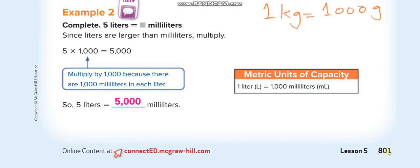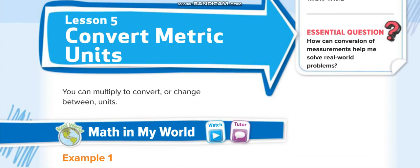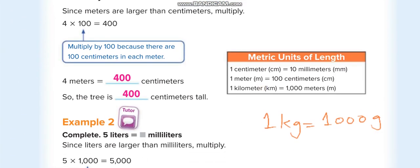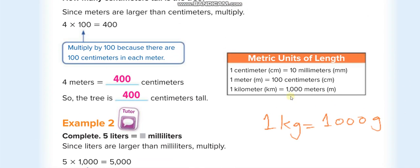In this lesson we are going to convert metric units — the metric units of length, the metric units of capacity for liquid, and the metric units of mass. We studied four units in length: millimeters, centimeters, meters, and kilometers. You have to memorize this table: one centimeter equals ten millimeters, one meter equals one hundred centimeters, and one kilometer equals one thousand meters.